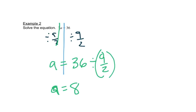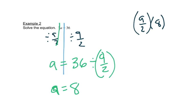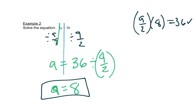Now I can check that. If I go back to my original problem, I had 9/2, and instead of A I put 8. If I check that in my calculator, I get 36. So I know that this answer is correct.